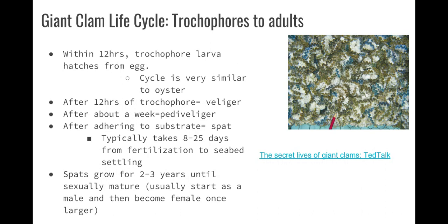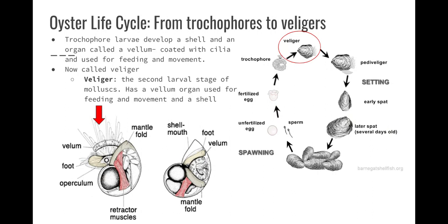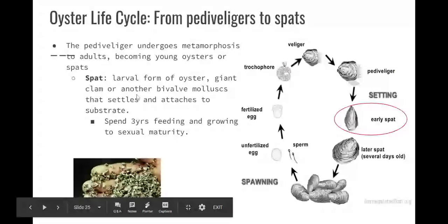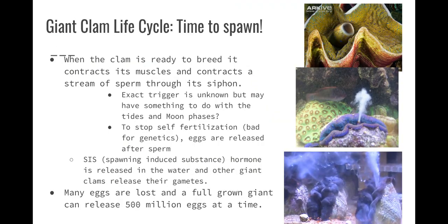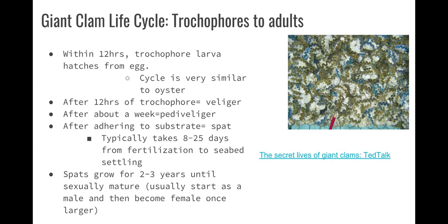Many eggs are lost, and a full-grown giant clam can release 500 million eggs at a time. Within 12 hours they become trochophore larvae — very similar to the oyster. After 12 hours the trochophore becomes a veliger, which starts developing a shell and has cilia and the velum organ for feeding and movement. About a week after that it's the pediveliger, which has the sensitive foot able to settle on a substrate. After adhering, they're called a spat, and this takes 8 to 25 days from fertilization to settling on the seabed. Spats grow for 2 to 3 years until sexually mature; they usually start as male, then once large enough become female because eggs take a lot more energy to produce.